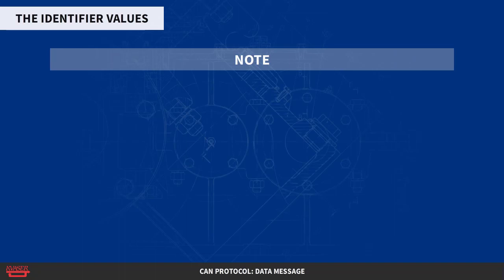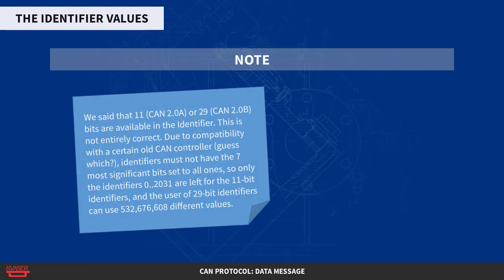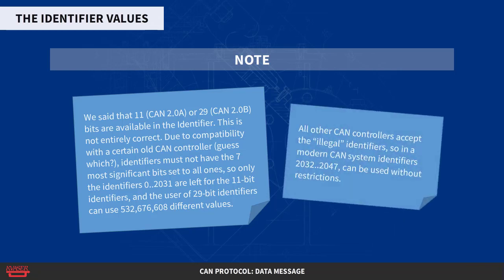A note on the identifier values. We said that 11 bits (CAN 2.0a) or 29 bits (CAN 2.0b) are available in the identifier — this is not entirely correct. Due to compatibility with a certain old CAN controller, identifiers must not have the 7 most significant bits set to all 1s. So only the identifiers 0 through 2031 are left for the 11-bit identifiers, and users of 29-bit identifiers can use 532,676,608 different values. Note that all other CAN controllers accept the illegal identifiers.